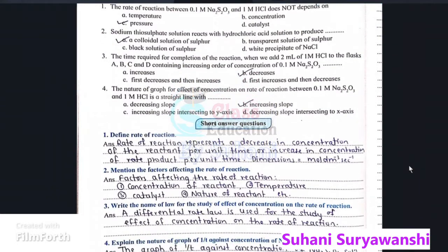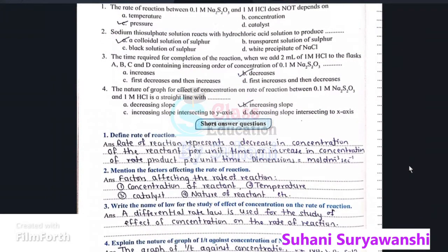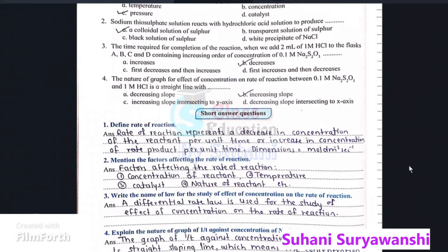Third, the time required for completion of the reaction when we add 2 ml of 1 mol HCl to the flasks A, B, C and D containing increasing order of concentration of 0.1 mol Na2S2O3, the answer is it decreases.